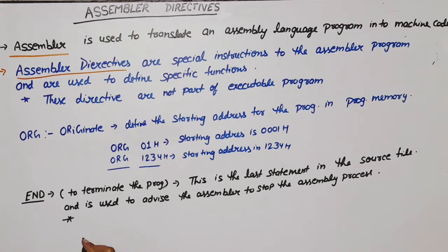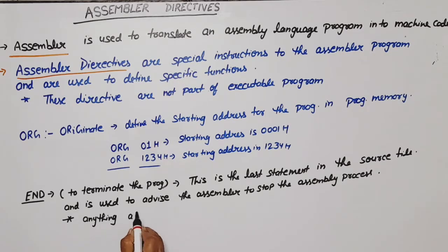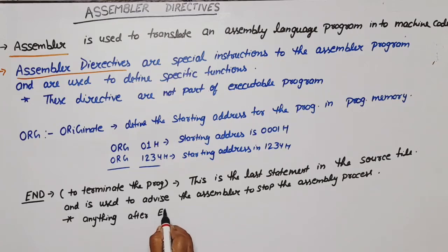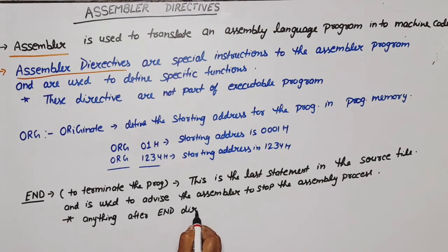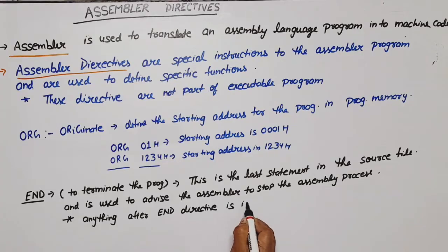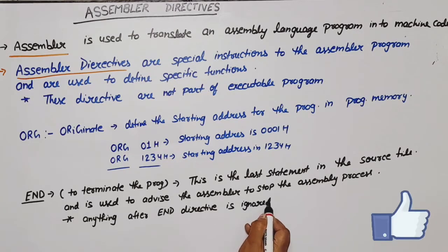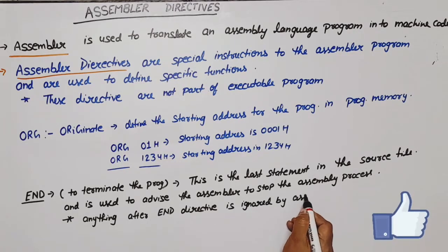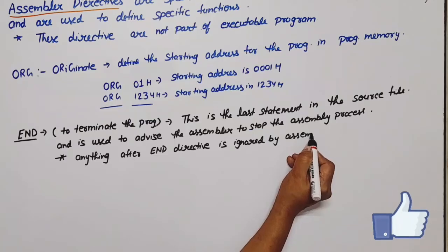Most importantly, END is used to advise the assembler to stop the assembly process. Anything after the END directive is ignored by the assembler — it will not execute.